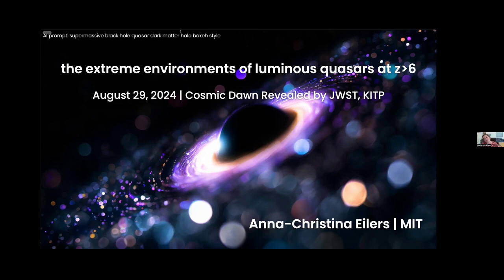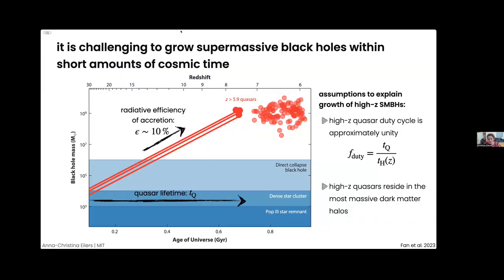I'm going to talk about some of the most extreme environments in the early universe, around the most massive black holes we know about—quasars at redshift six and above within the epoch of reionization that we can now study in great detail thanks to JWST. As a brief introduction, it's been an open puzzle for decades: how do we grow supermassive black holes of a billion solar masses that we observe in quasar centers when the universe is only about 700 to 800 megayears old?